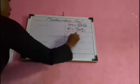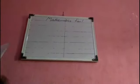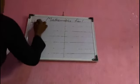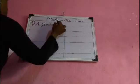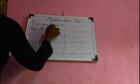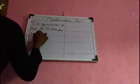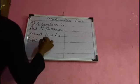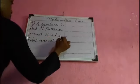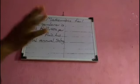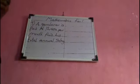Number nine: a gardener is paid 12,400 naira per month — find his total annual salary. Annual means one year. This person goes home with 12,400 naira every month.